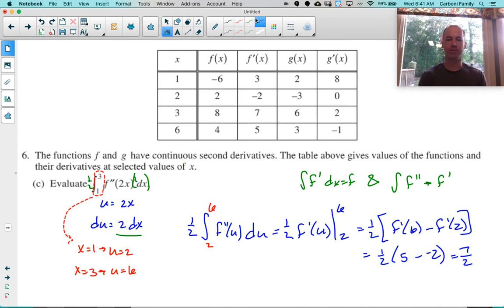If you did not convert the limits of integration, then from this step 1 half F prime of U, if you still have a 1 and a 3, you would need to then plug the 2X back in for the U and then evaluate from 1 to 3, which would give you 1 half of F prime of 6 minus F prime of 2. Either way doesn't matter which way you use. You're going to get the same answer either way, and both are acceptable on the AP exam.